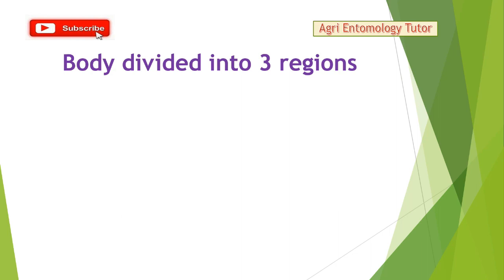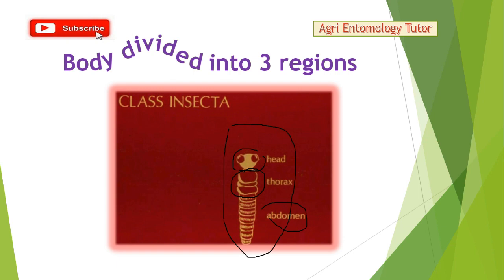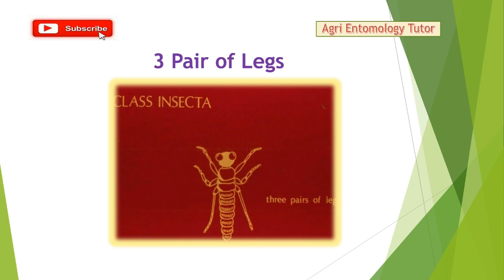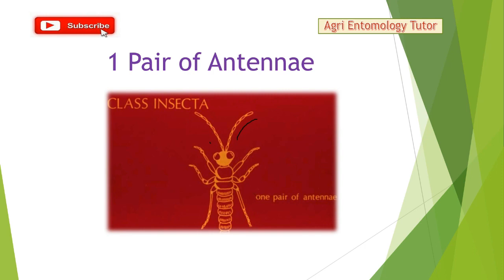Let's look at how to identify an insect. Here you can see the picture: the body is divided into three regions — the head, the thorax consisting of three segments, and the abdominal part. Insects consist of three pairs of jointed legs and one pair of antennae, which are sensory structures.